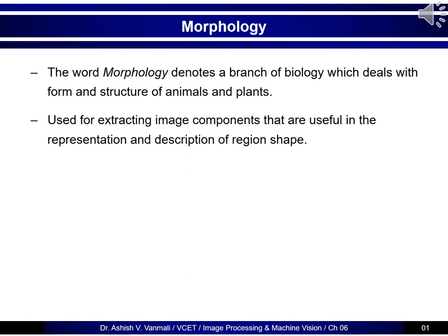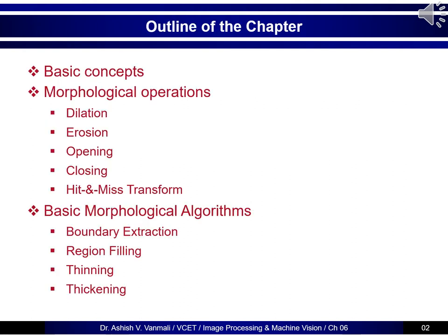Morphological image processing is very much useful to extract the components of an image, and then we use these components to represent image properties or shapes. This is a basic outline of the chapter. We will initially start with basic concepts required in morphology, and then we will see some basic operations: dilation, erosion, opening, closing, and then an operation called hit and miss transform.